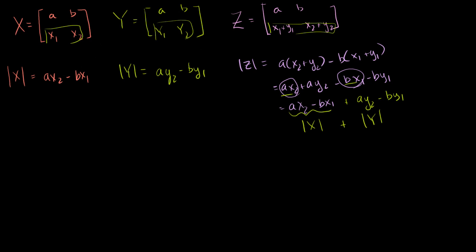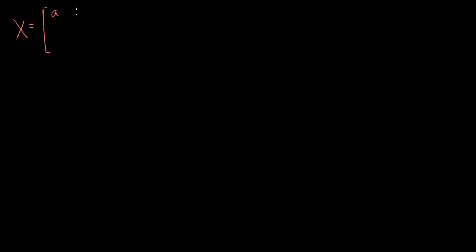Let me show you the 3 by 3 case, which I think makes it a bit more general. Then we'll go to N by N. So let's redefine our matrices for the 3 by 3 case. Let's say matrix X has first row A, B, C; middle row X1, X2, X3 — that's the row in question; and third row D, E, F. I'm using the middle row so you don't think it always has to be the last row.